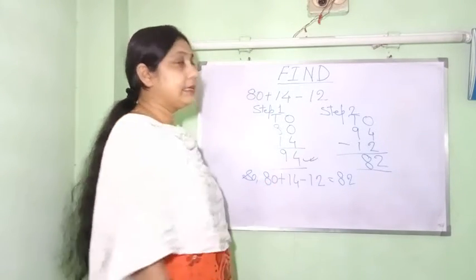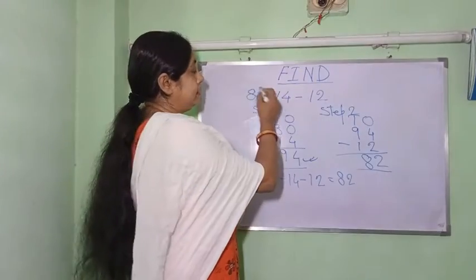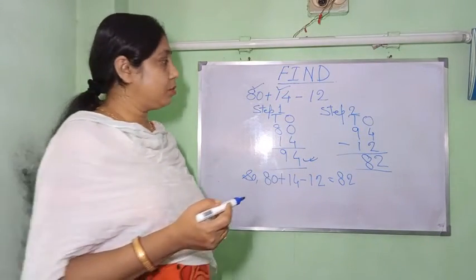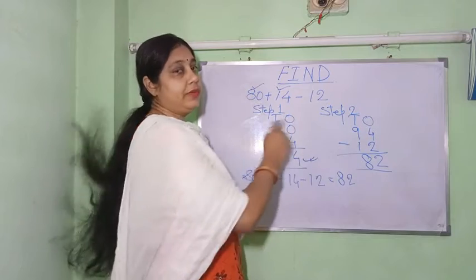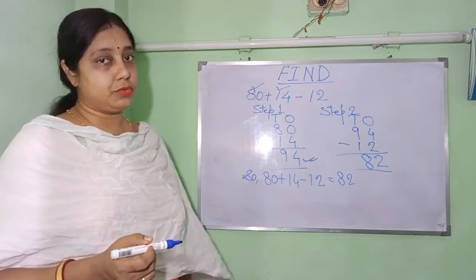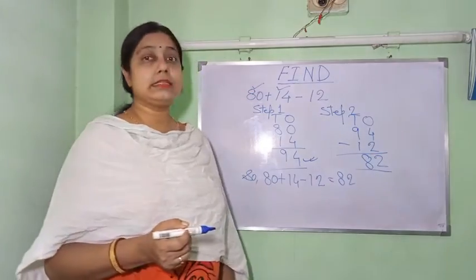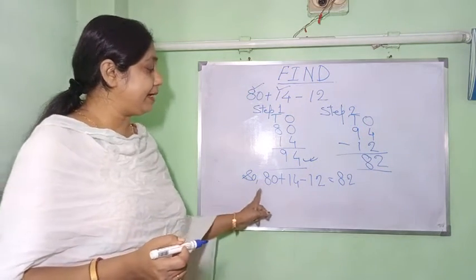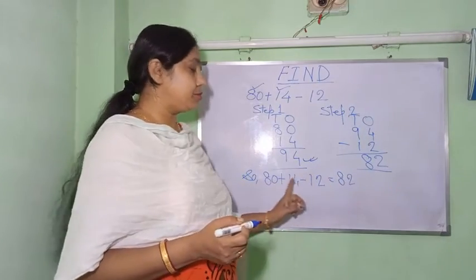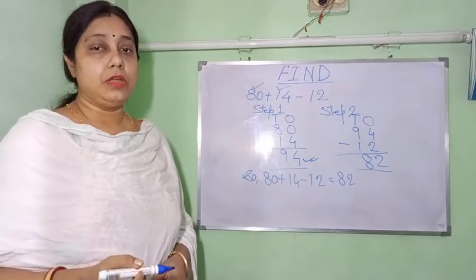Whatever answer came in step 1, we carry it forward to step 2. So 94 minus 12: 4 minus 2 is 2, and 9 minus 1 is 8, so the answer is 82. Below, you copy the question and write: 80 plus 14 minus 12 equals 82.